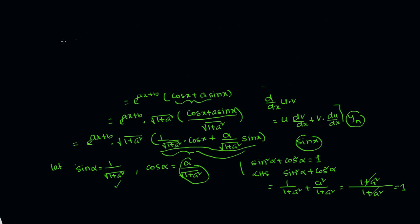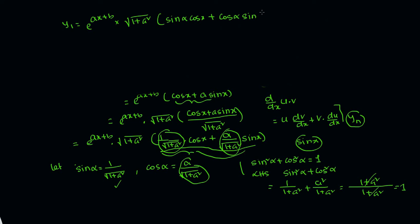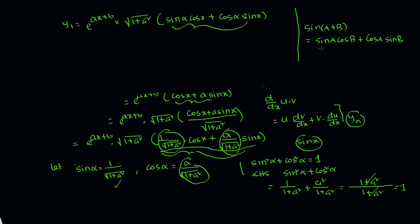So the expression in the bracket becomes: sin alpha into cos x plus cos alpha into sin x. This matches the sin(A+B) formula: sin(A+B) = sin A·cos B + cos A·sin B.